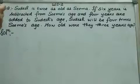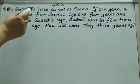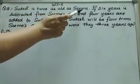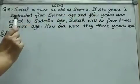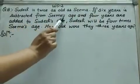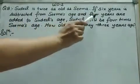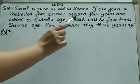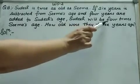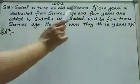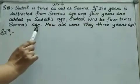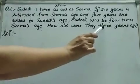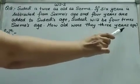Question 18: Sudesh is twice as old as Sima. If 6 years is subtracted from Sima's age and 4 years are added to Sudesh's age, Sudesh will be 4 times Sima's age. How old were they 3 years ago?